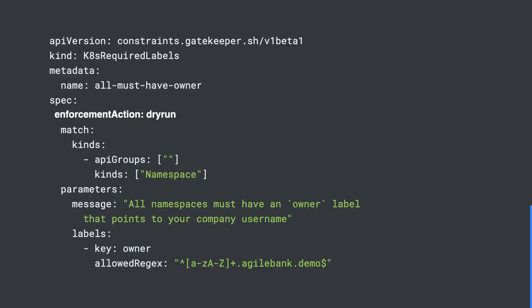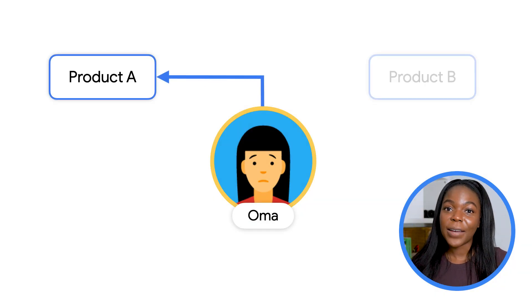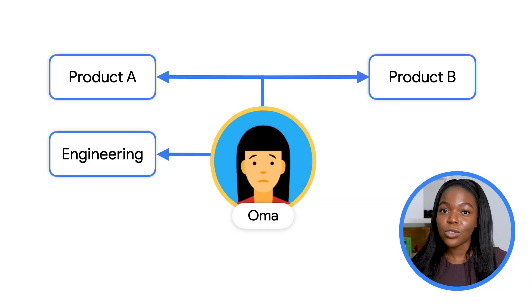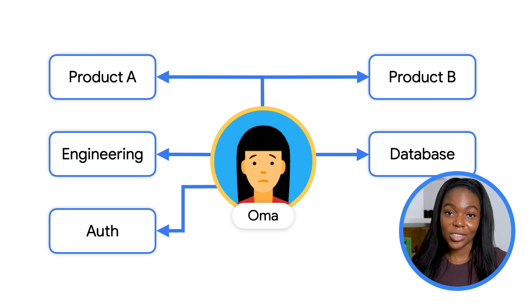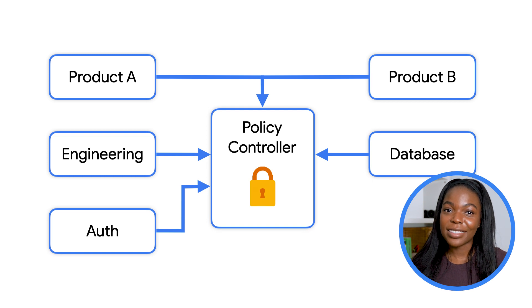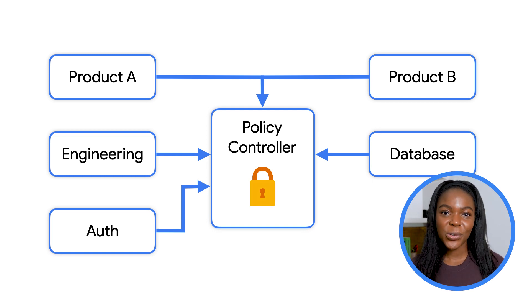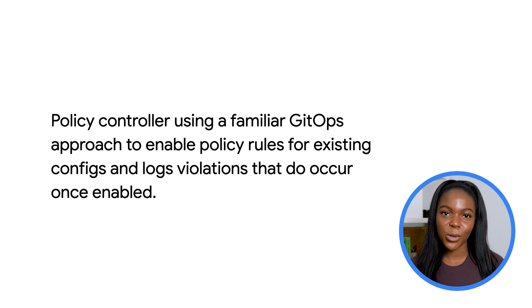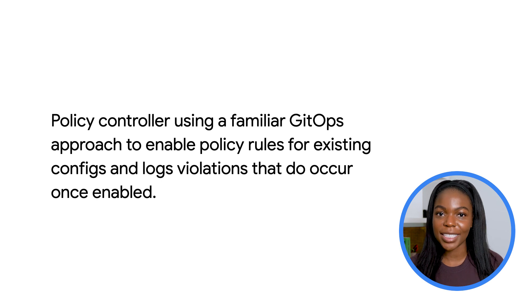She now has a list of teams and services to talk to. After they fix the issues, she removes the enforcement action, which means the default enforcement action to deny takes effect to stop further policy violations from occurring. In the past, she used to have to follow up with teams individually to retroactively track down and fix policy violations. Now with Policy Controller, Oma has a list of violations and a way to block them from occurring. Policy Controller uses a familiar GitOps approach to enable policy rules for existing configs and logs violations that do occur once enabled.